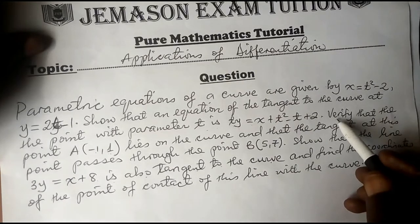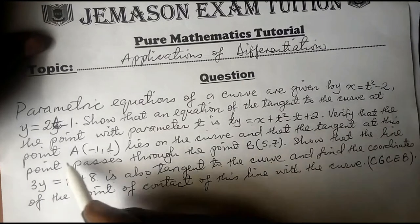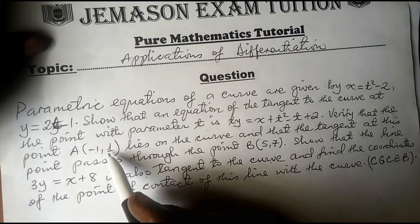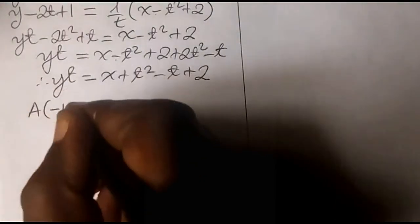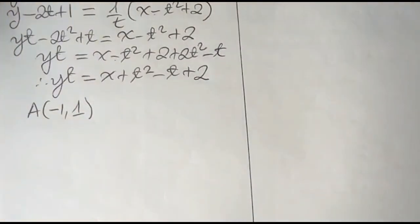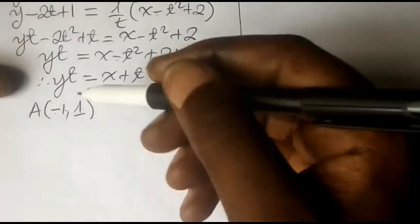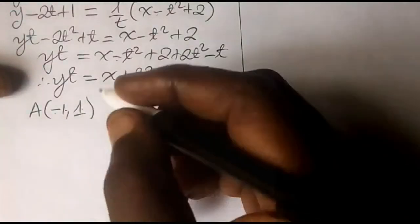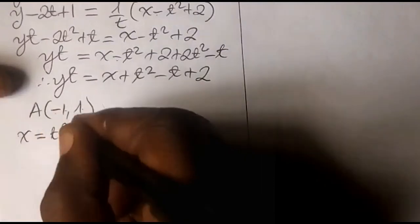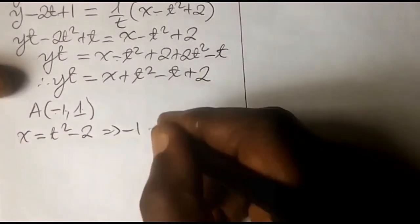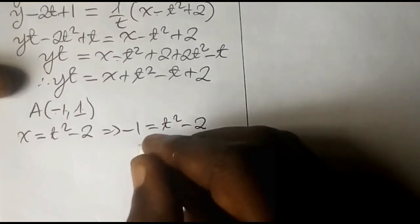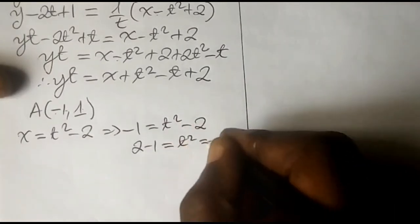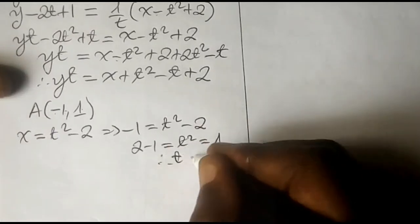The equation further asks us to verify that point A with coordinates negative 1, 1 lies on the curve. Since the curve is given parametrically, it suffices to show there is a unique value of t for which x equals negative 1 and y equals 1. From x equals t squared minus 2, we get negative 1 equals t squared minus 2, so t squared equals 1, giving t equals plus or minus 1.